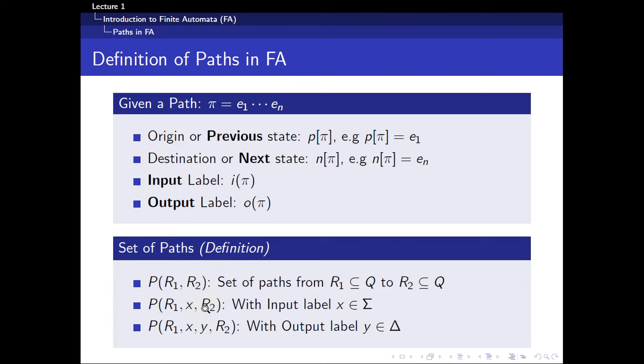Certain paths require an input. So if you have a path that starts from R1 and ends in R2, and it requires an input of X, you will be thrown into this particular collection as well. And so on and so forth, certain paths require an input and produce an output. So if a path starts from a state in R1, ends up in a state in R2, requires an input of X and produces an output of Y, you'll be thrown into this particular set as well.